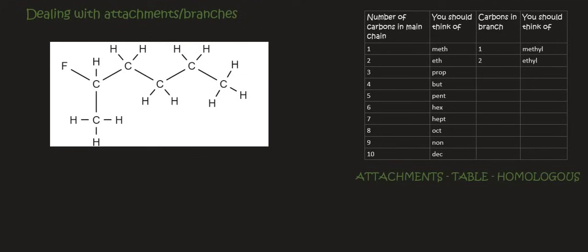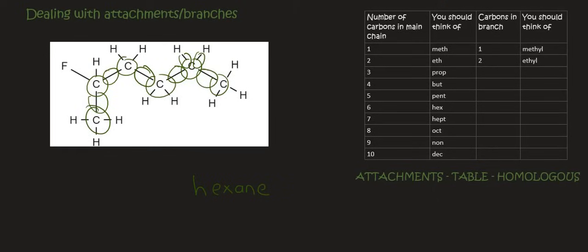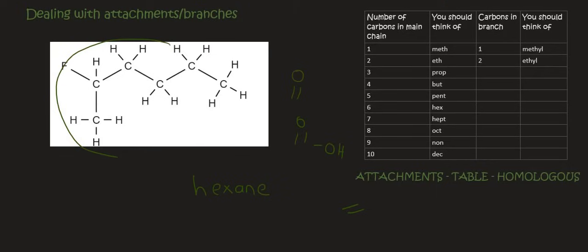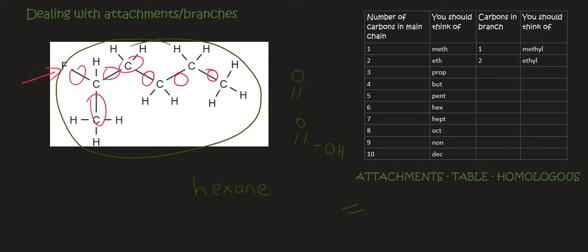With an alkane, all we have are single bonds, so the functional group is absolutely everywhere. Because we can't label from the functional group when it's everywhere, we have to look at the branches instead. So you should always look at the functional group first and then the branches. When you have molecules with other kinds of functional groups — like O's, OH's, or double bonds — you ignore the branches and label from the side closest to the functional group.